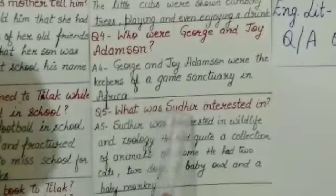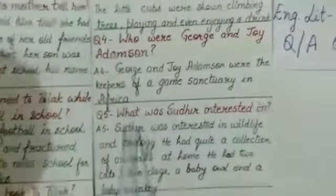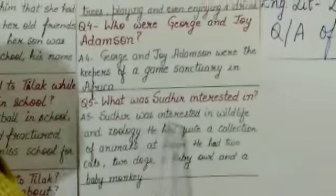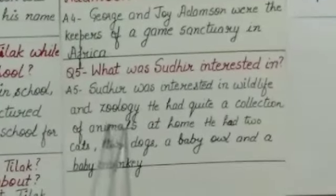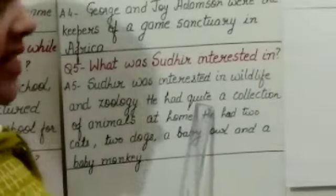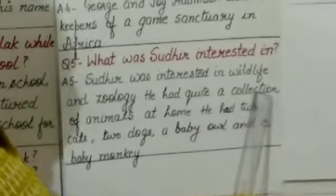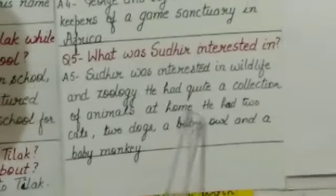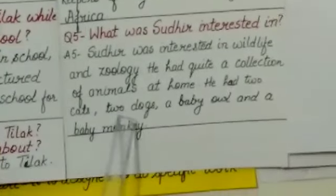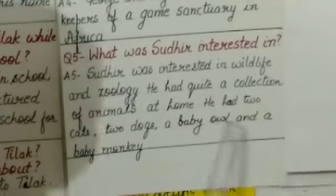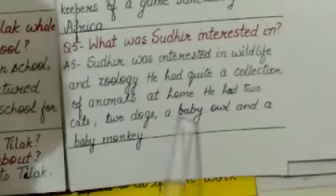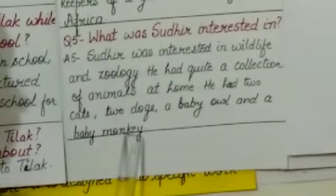Question 5: What was Sudhir interested in? Answer 5: Sudhir was interested in wildlife and zoology. Full stop. He had quite a collection of animals at home. Full stop. He had two cats, two dogs, a baby owl, and a baby monkey. Full stop.